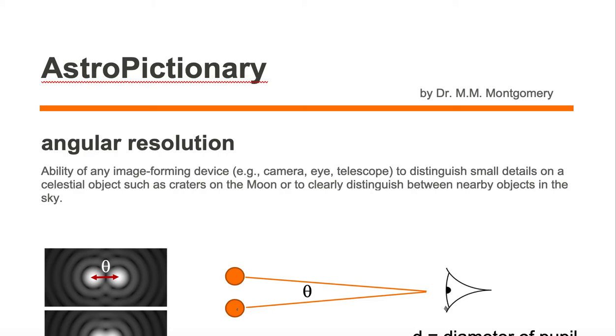Angular resolution is the ability of any image-forming device, e.g. camera, eye, telescope, to distinguish small details on a celestial object, such as craters on the moon, or to clearly distinguish between nearby objects in the sky.